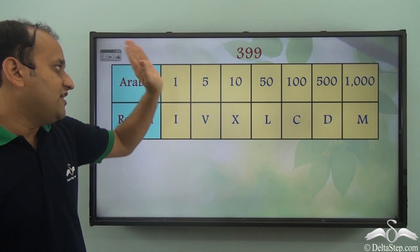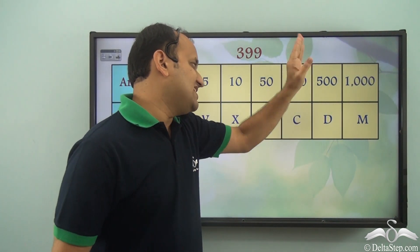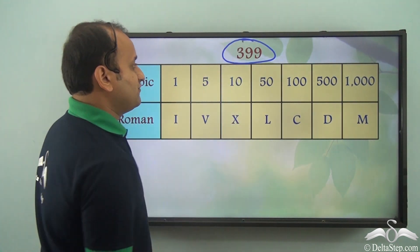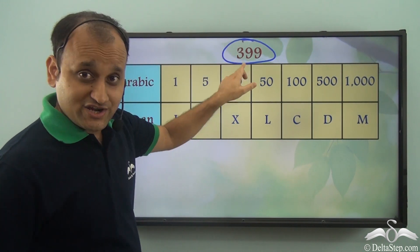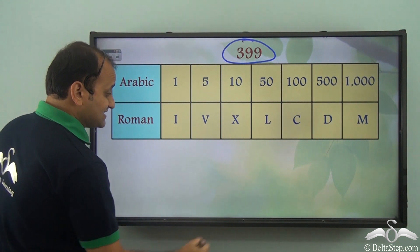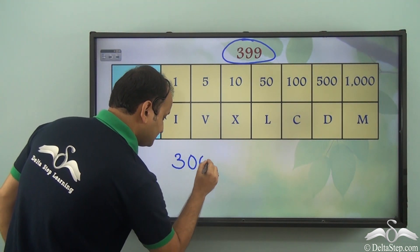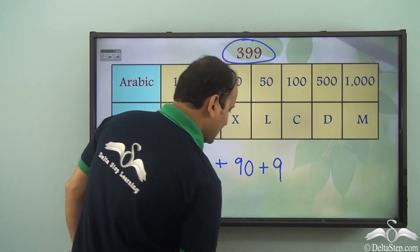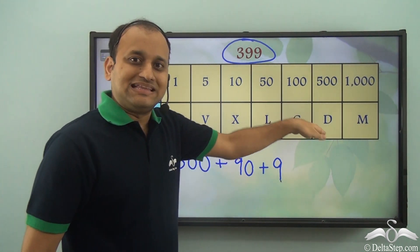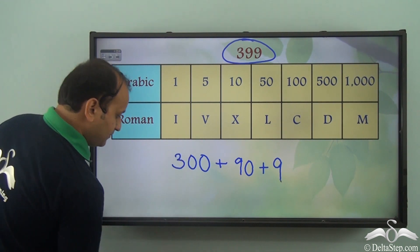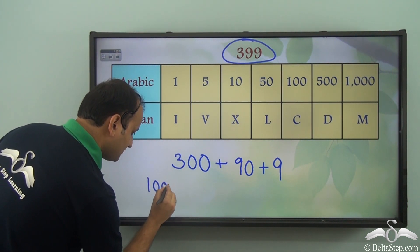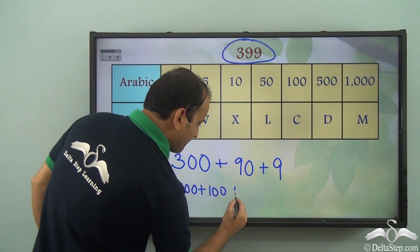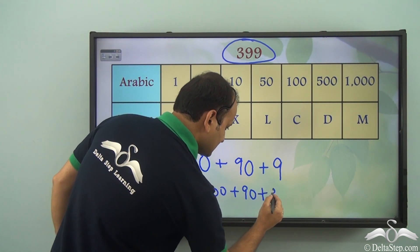So we have I which represents 1, V which represents 5, X 10, L 50, C 100, D 500, and M 1000. Now what do we need to do first? We need to break up this particular number. So we have 300 plus 90 plus 9, isn't it? So we can write it as 300 plus 90 plus 9. So what did we do? Well, we broke these numbers into smaller numbers. 300 can further be written as 100 plus 100 plus 100, and then you have plus 90 plus 9.